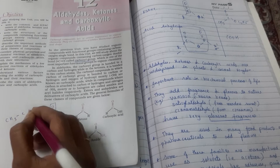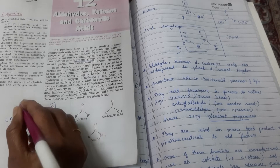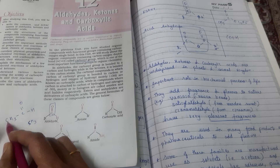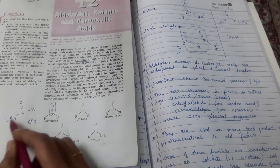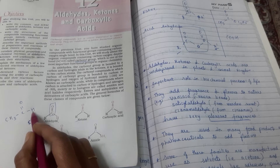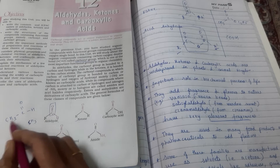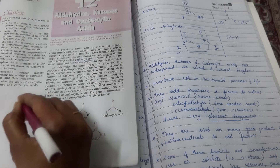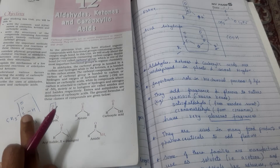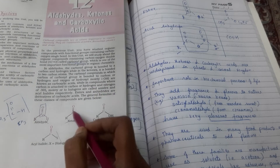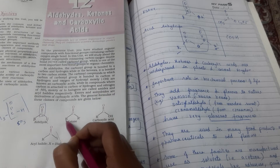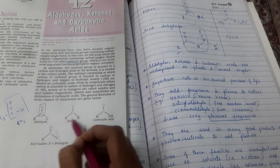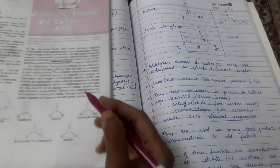CH3 CH double bond O — we call it C double bond O. This side is carbon; here it's one alkyl group and here it's hydrogen. So these are aldehyde groups. CHO is called aldehyde groups. This is aldehyde. Now, this is C double bond O with two alkyl groups — one alkyl on each side. We call it ketone.